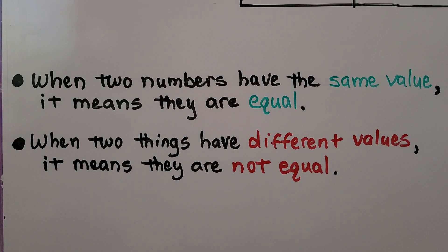When two numbers have the same value, it means they are equal. When two numbers have different values, it means they are not equal.